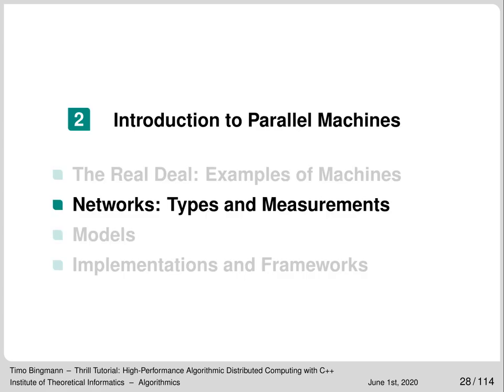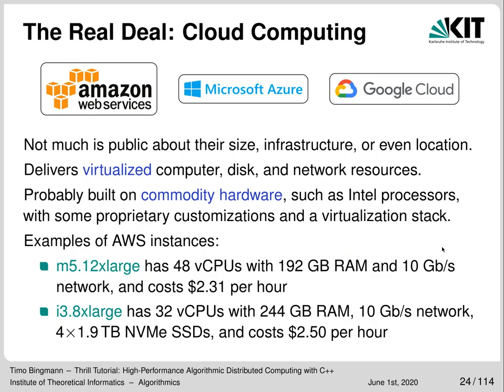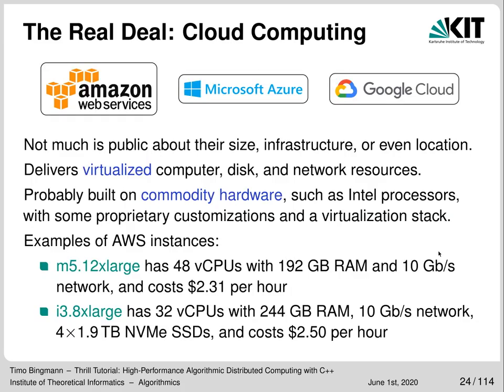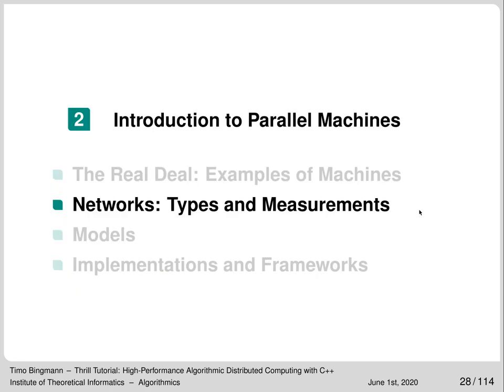That was an overview of parallel systems available these days. Depending on the application, it is very important to pick the right system. Thrill is currently designed for small clusters of homogeneous systems like smaller supercomputers, possibly with disks. It also works well with shared memory systems because these have very similar characteristics. Thrill is designed for implementing complex algorithms which are not embarrassingly parallel and thus easy to schedule via batch jobs.